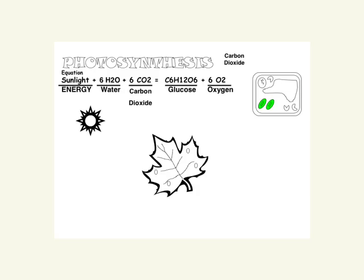It also produces oxygen. To a plant, the glucose is what it eats — it uses that for its own energy. The oxygen is a waste product, and it breathes that out. The plants get rid of the oxygen.